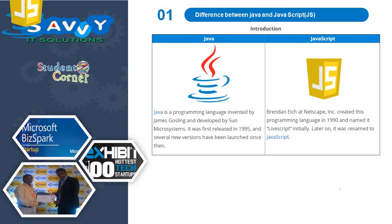Java is a programming language invented by James Gosling and developed by Sun Microsystems. It was first released in 1995 and several new versions have been launched since then. JavaScript was created at Netscape. It was created in 1990 and named LiveScript, and later renamed to JavaScript.